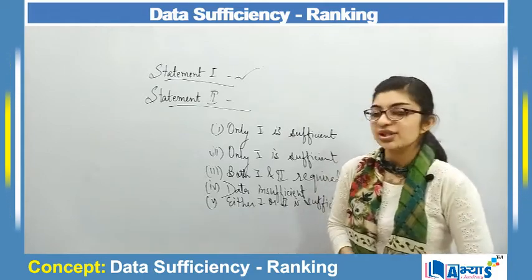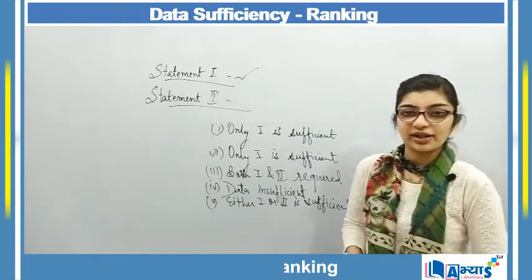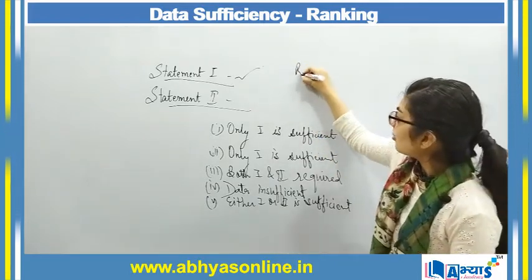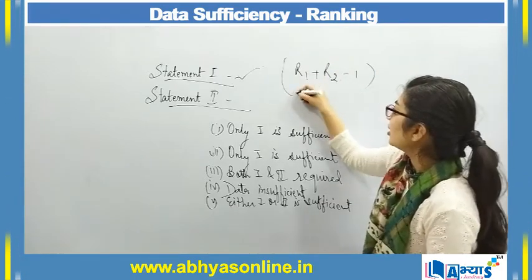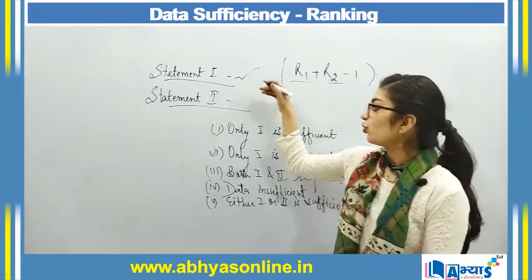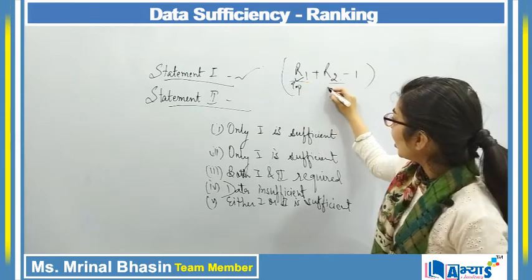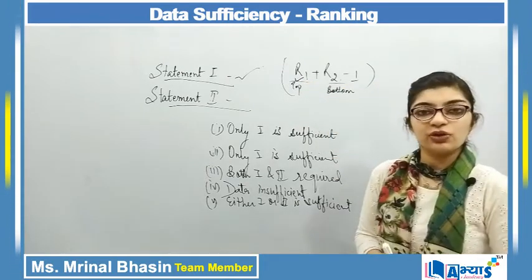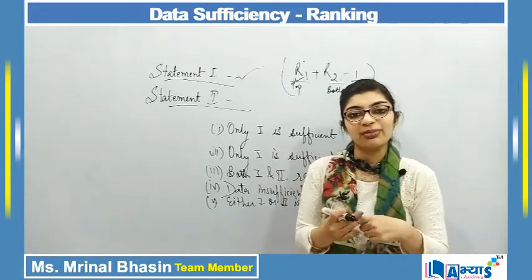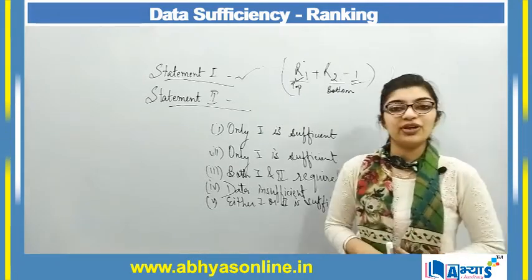Order and ranking is important and will be discussed in detail in individual videos. For now, you need to know that if you are asked for the total number of students or persons, the formula is R1 plus R2 minus 1. Questions will give you the rank from the top and the rank from the bottom, and ask you for the total. You add both ranks and subtract 1, because the person being ranked appears twice — once from the top and once from the bottom — so we do minus 1 to avoid double counting.